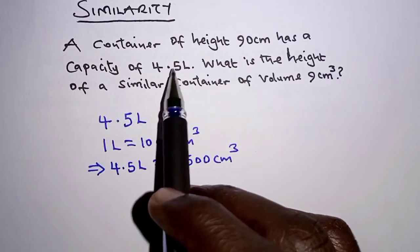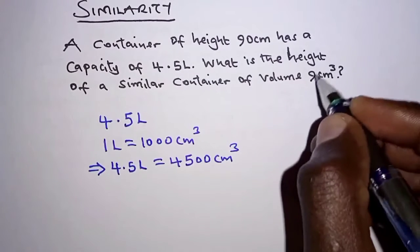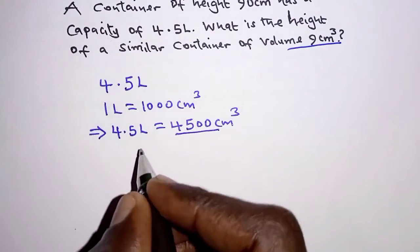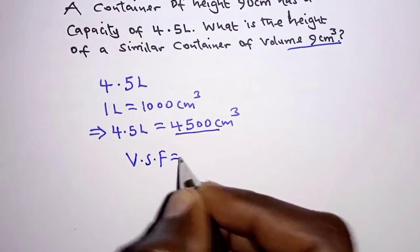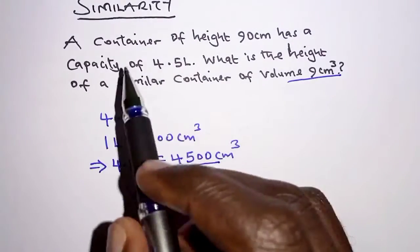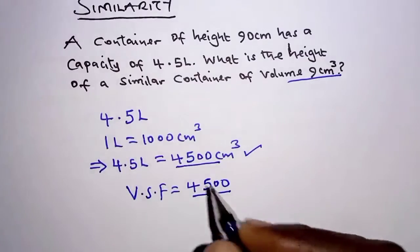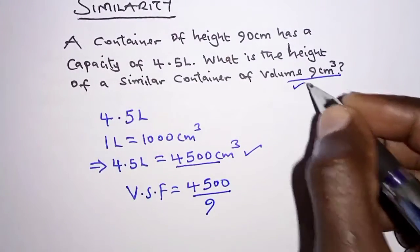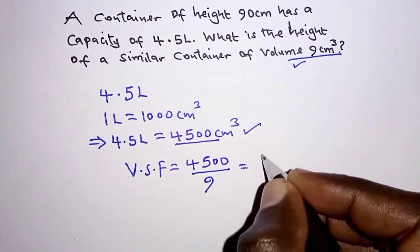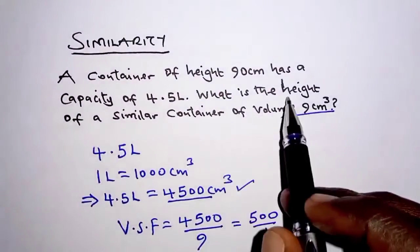We are given the volume of a similar container and we also know the volume of the first container. From that we can determine the volume scale factor, which is the ratio of the volumes of the two containers. Taking the volume of the first container, 4500, over the volume of the similar container, 9, gives us the volume scale factor, which simplifies to 500 over 1.